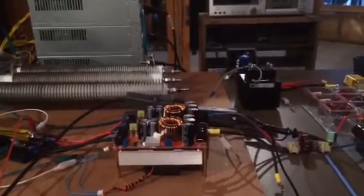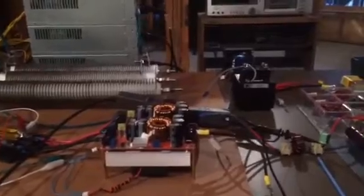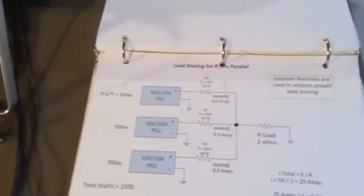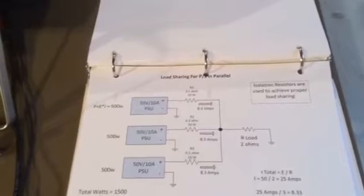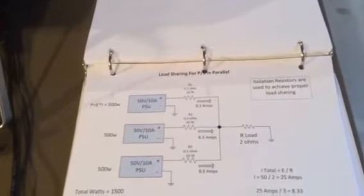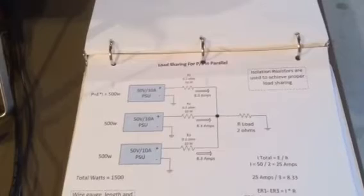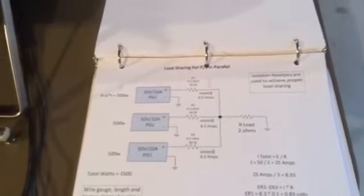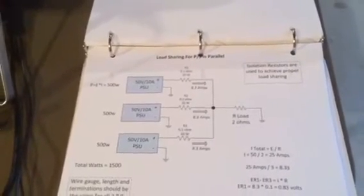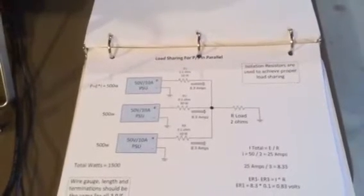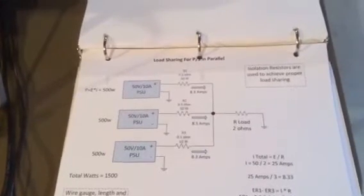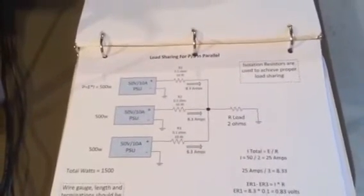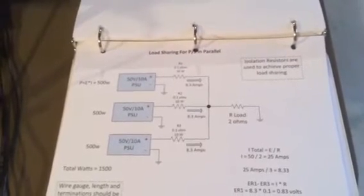So before I demonstrate the before and after results, I want to talk about how we do this. Here's a drawing I made up. It's an example of three 50 volt 10 amp power supplies in parallel. If I make no special provisions in the circuitry, what you'll find is one power supply will produce all the current or most of the current and the remaining power supplies will just stand there idle with very little current being sourced.